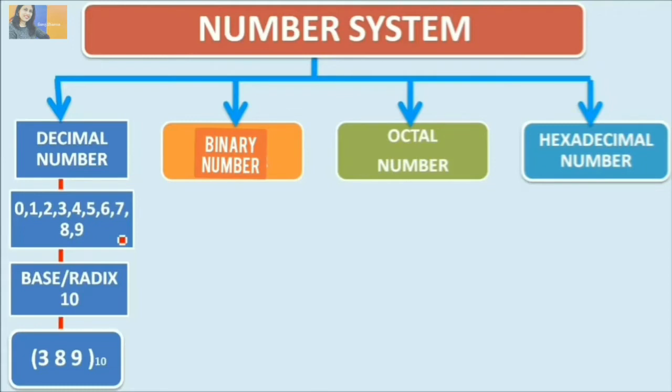The first number system is the decimal number system. The decimal number system is the number system used in our day to day life. We are using different digits from 0 to 9 in mathematics. This is basically used in mathematics. 0, 1, 2, 3, 4, 5, 6, 7, 8 and 9 are the digits used. Totally there are 10 digits used. That is why it is said to have a base or radix of 10. It is represented like 389 to the base 10.